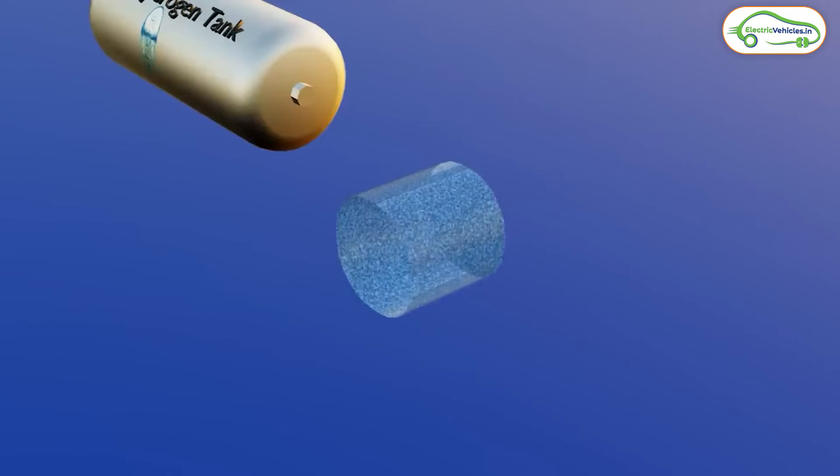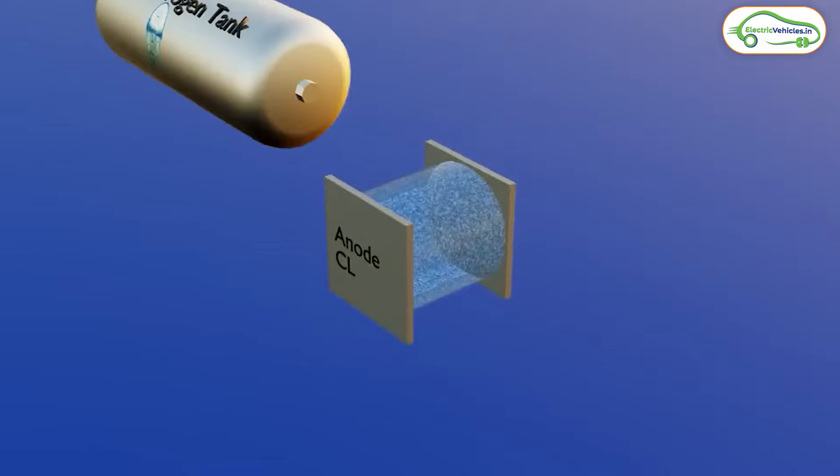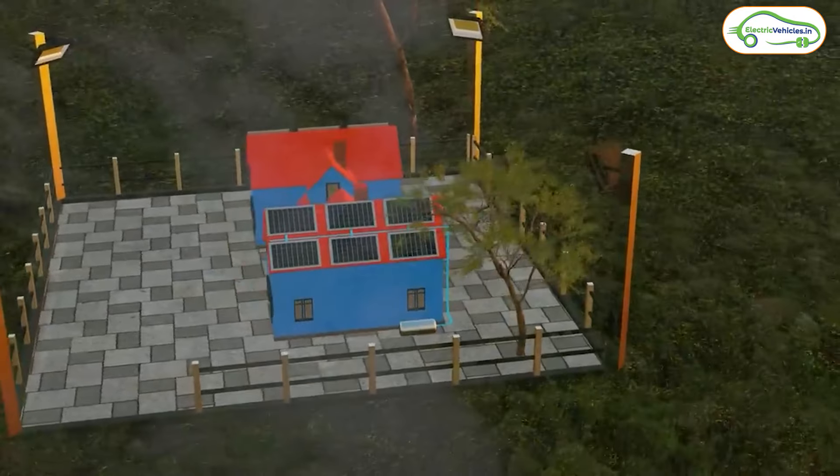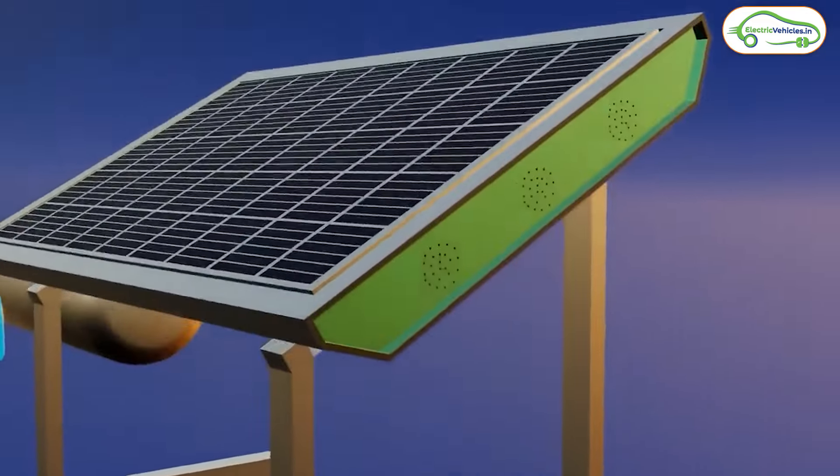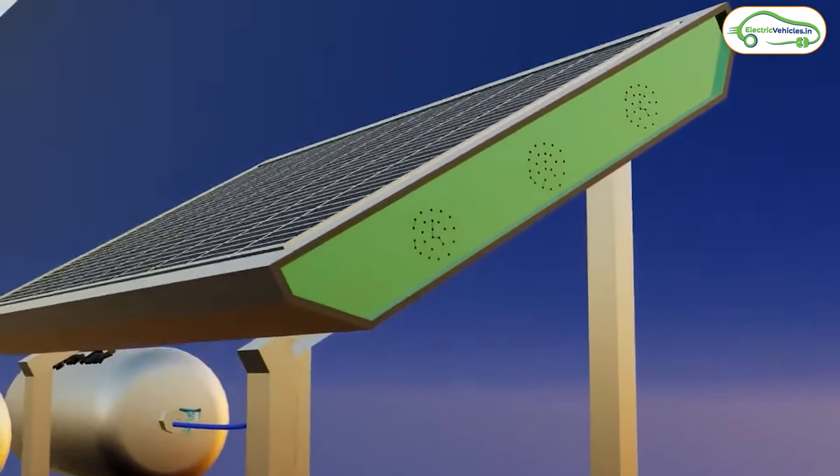This produced green hydrogen can be used for various purposes. We can pump up our own vehicle and run without causing any pollution to the environment. If these solar panels get successful globally, it can change the future of the entire automobile industry.